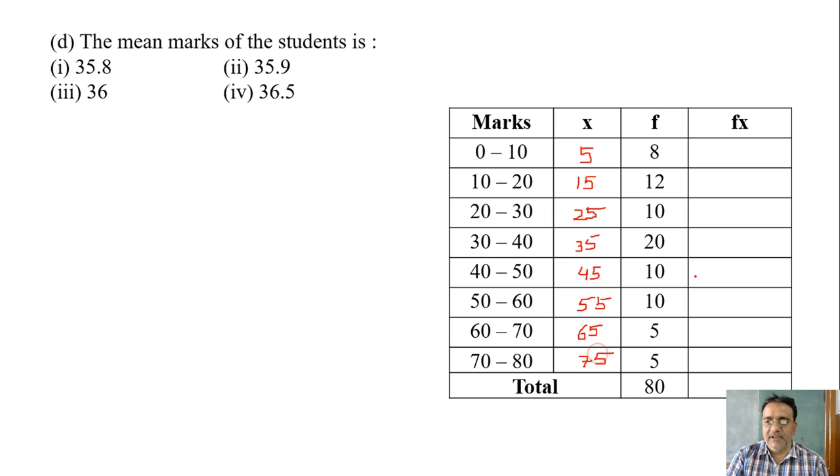Now f into x: 5 into 8 is 40, 15 into 12 is 180, 25 into 10 is 250, 35 into 20 is 700, 45 into 10 is 450, 55 into 10 is 550, 65 into 5 is 325, 75 into 5 is 375.